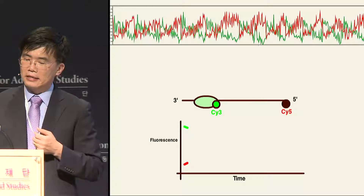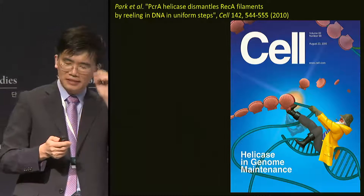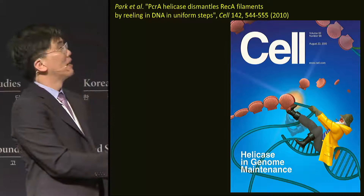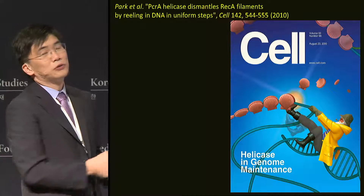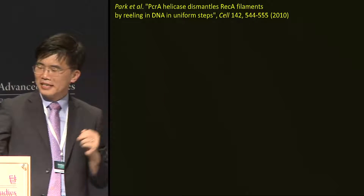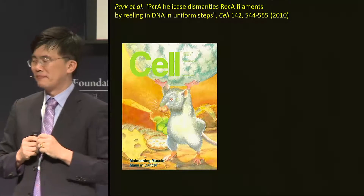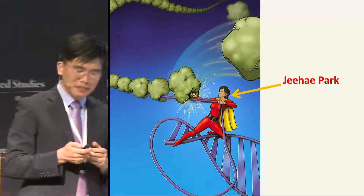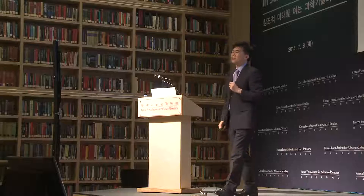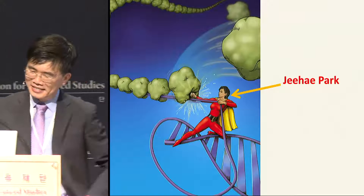We wrote up a manuscript reporting the findings and asked a magazine to publish the study. After the usual back and forth, they agreed. I spent a lot of money to hire local artists to prepare a cover illustration — a protein old man sitting on the DNA, reeling in the DNA to kick off the proteins bound to it. Unfortunately, they didn't use it; they used a picture of a diabetic mouse instead. Here's another rejected image: my student Jia Park sitting on the DNA as a superhero, knocking off asteroids during the process.